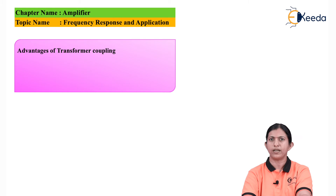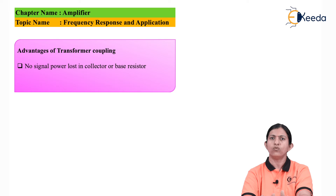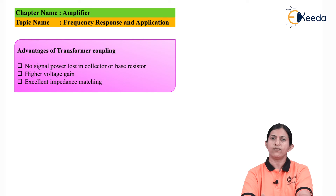The advantages of the transformer coupled amplifier: First, there is no signal lost in the collector resistor, because in transformer coupling we use a transformer to take the output rather than a collector resistor, so there is no voltage drop across RC. Second, it provides higher voltage gain compared to the RC coupled amplifier. Third, it provides excellent impedance matching between successive stages.